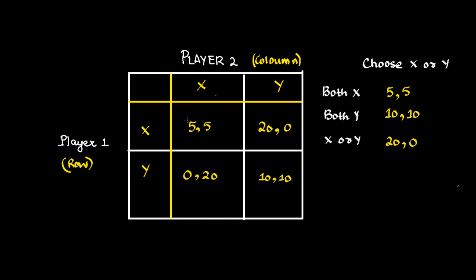Now if you look at this: if player 1 chooses X, then the best strategy for player 2 is to choose between 5 or 0, so the best strategy is to go with 5, that is X. If player 1 chooses Y, then the best strategy for player 2 is to choose X again, which gives 20 over 10. So no matter what player 1 chooses, the best strategy for player 2 is to choose X.